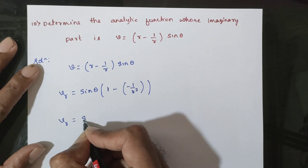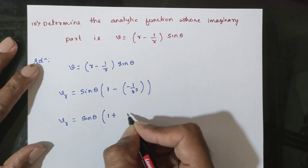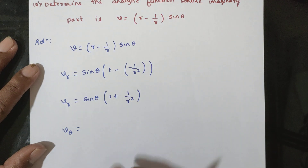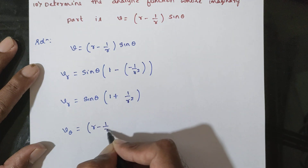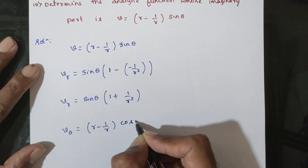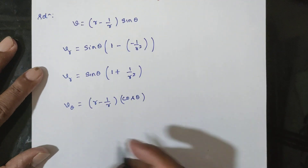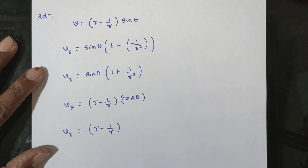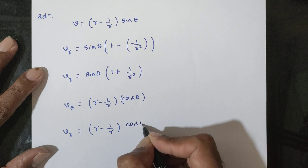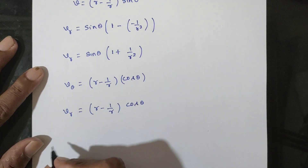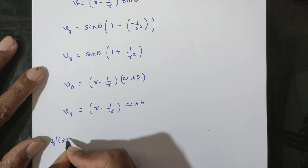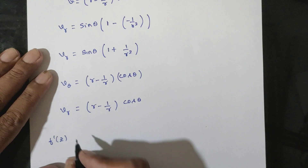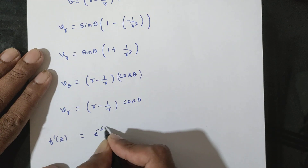We compute the partial derivatives. Vr is equal to sinθ · (1 + 1/r²). And Vθ is equal to (r - 1/r)cosθ. From the polar Cauchy-Riemann equations, we use these to find f'(z).